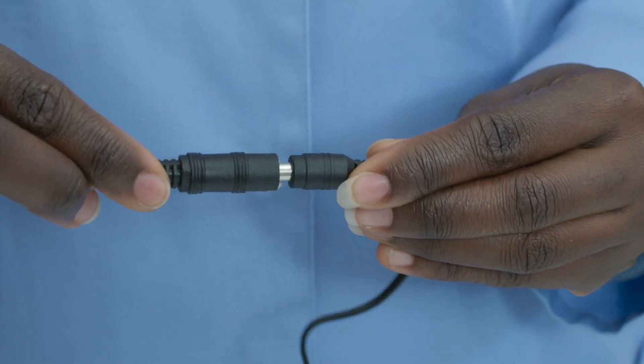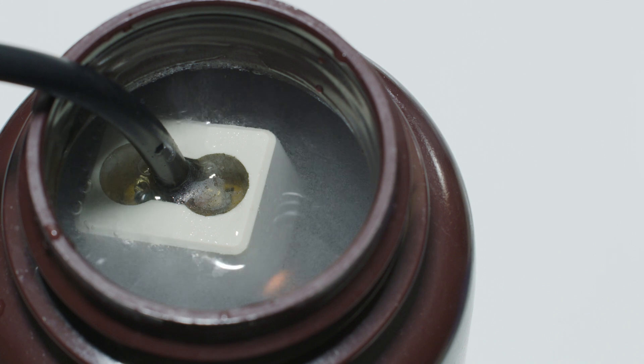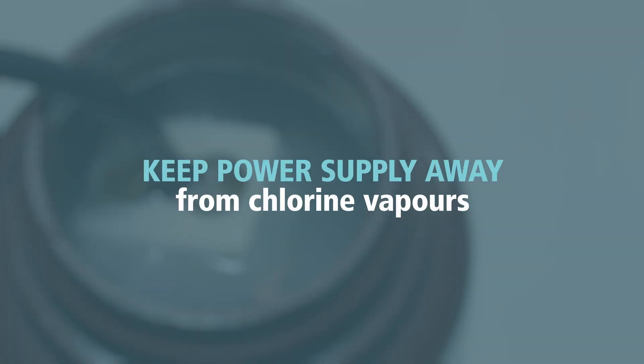The electrolysis starts as soon as you connect the device to the already connected power supply. The low voltage of the device limits the risks of electrocution. Avoid breathing the chlorine gas during production.